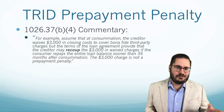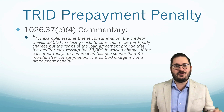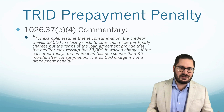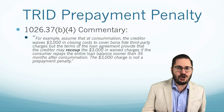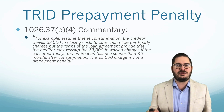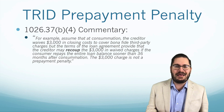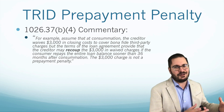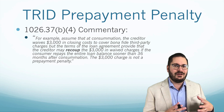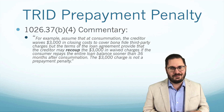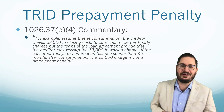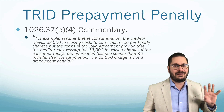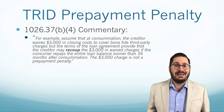The commentary gives some examples. For example, assume that at consummation the creditor waives $3,000 in closing costs to cover bona fide third-party charges, but the terms of the loan agreement provide that the creditor may recoup the $3,000 in waived charges if the consumer repays the entire loan balance sooner than 36 months after consummation. In this case, the $3,000 charge is not a prepayment penalty, and you don't have to disclose it that way — so you would say 'no' on that loan terms box on page one of your loan estimate and closing disclosure.